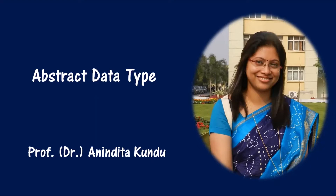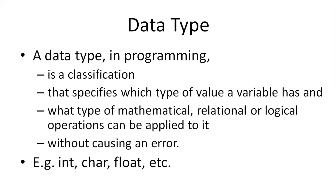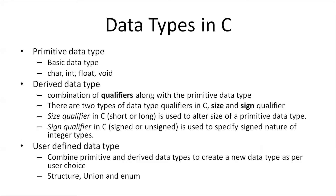In this tutorial we will be discussing the concepts of abstract data type. Before going into the concepts of an abstract data type, let us first understand what is a data type. In programming, a data type is a classification that specifies which type of value a variable can hold and what type of operation can be applied to it. Operations can be mathematical, relational, or logical. Examples of data types are int, char, float, etc.